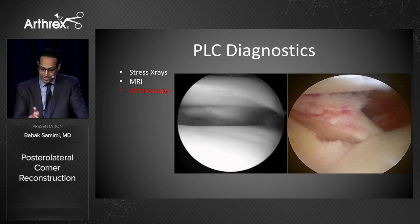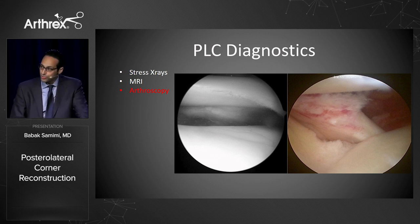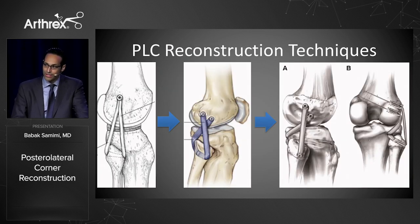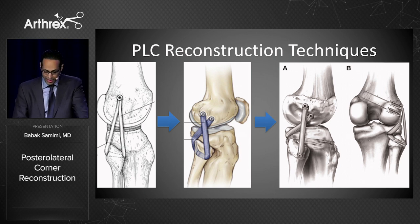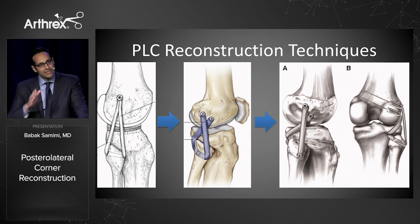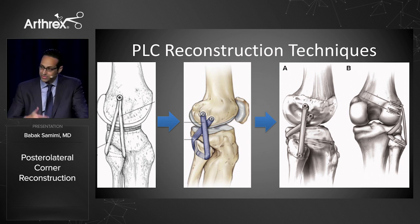Arthroscopy is also critical. If you have a drive-through sign and you see fraying or tearing of the popliteus tendon, that should alarm you to instability on the lateral side. You can't ignore it, because as we've seen, it will lead to failure.